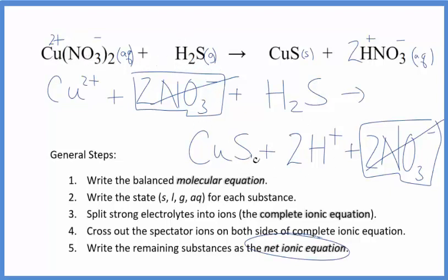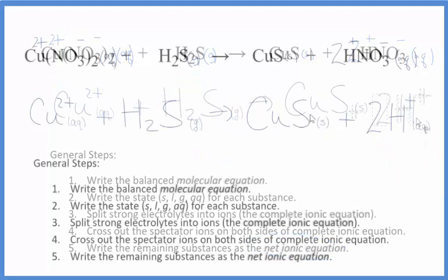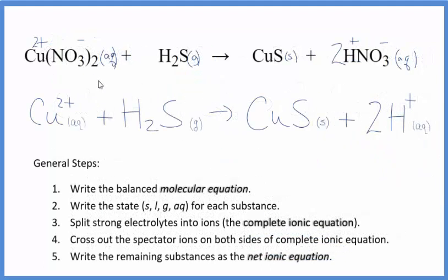I'll clean this up and write the states. This is the balanced net ionic equation for Cu(NO3)2 plus H2S.